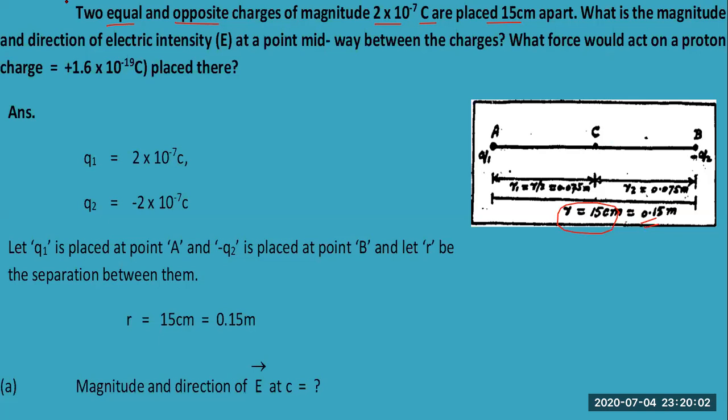What is the magnitude and direction of electric intensity at a point midway between the charges, and what force would act on a proton of charge 1.6 × 10^-19 coulombs placed there at this point?